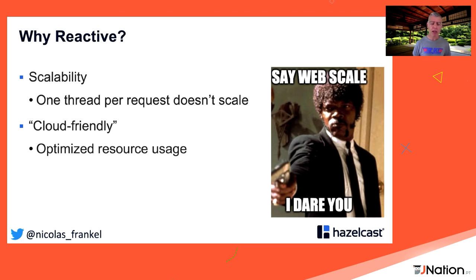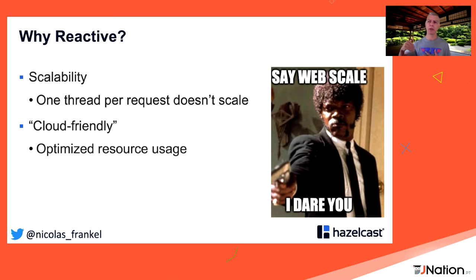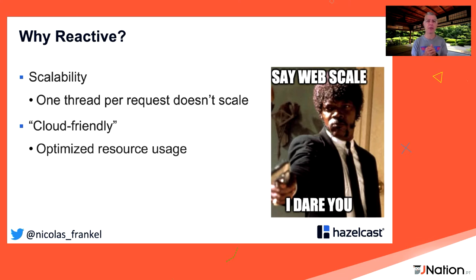A much better reason is it's more cloud-friendly. When you host your own on-premise infrastructure you don't care about optimizing CPU cycles or memory usage — the infrastructure is there. But when you move to the cloud you are billed for every CPU instruction and every byte of memory, so in that case it makes more sense to use reactive.